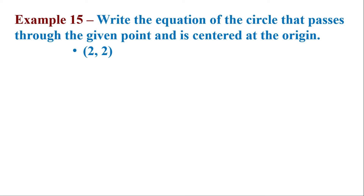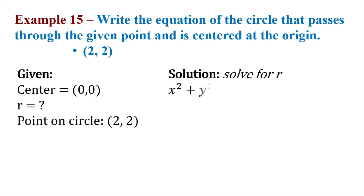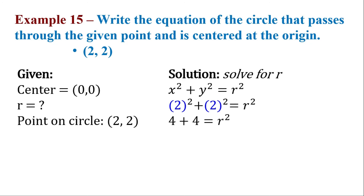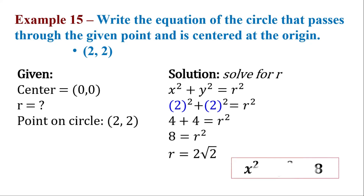Write the equation of the circle that passes through the point 2 comma 2 with center at the origin. Let's solve for r by substituting 2 and 2 into x and y. That gives us 4 plus 4. So our radius is the square root of 8, or 2 square root of 2. That gives us this equation of the circle.